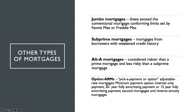So what are these other types of mortgages? First, we have what we call in the US jumbo mortgages. When something is classified as a jumbo mortgage, these mortgages typically exceed the conventional mortgage conforming limits set by Fannie Mae or Freddie Mac. Fannie Mae and Freddie Mac are the regulatory bodies that set the limits of these mortgages in the US. If something is classified as a jumbo mortgage, it means this particular mortgage is not your average mortgage in terms of size.